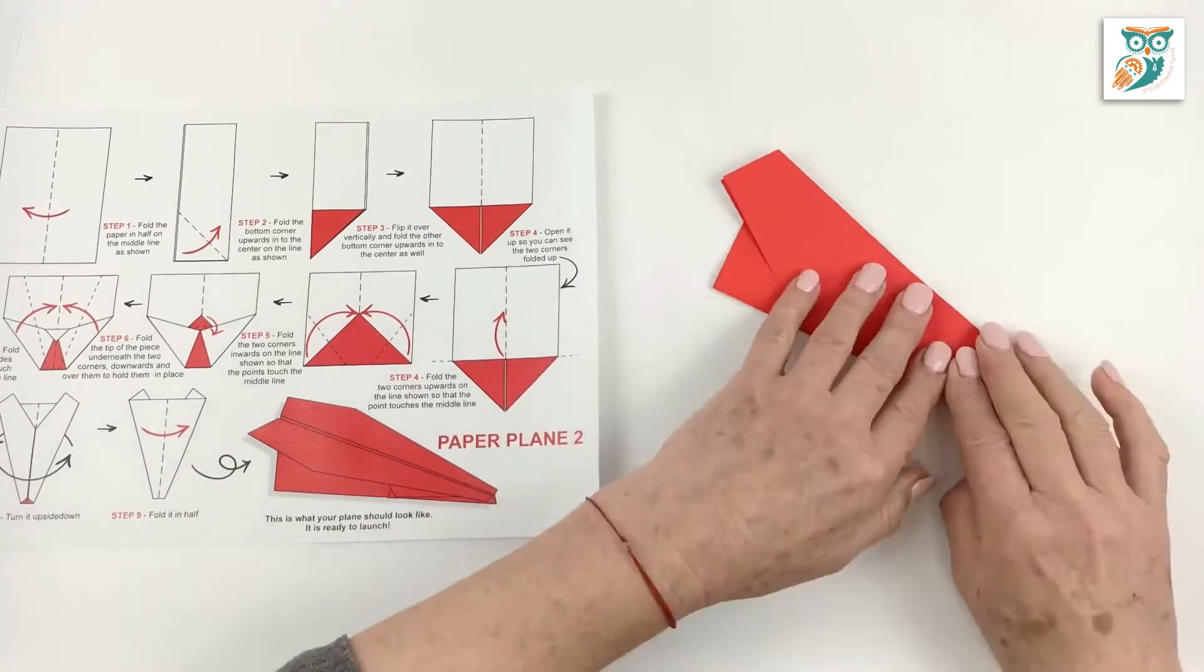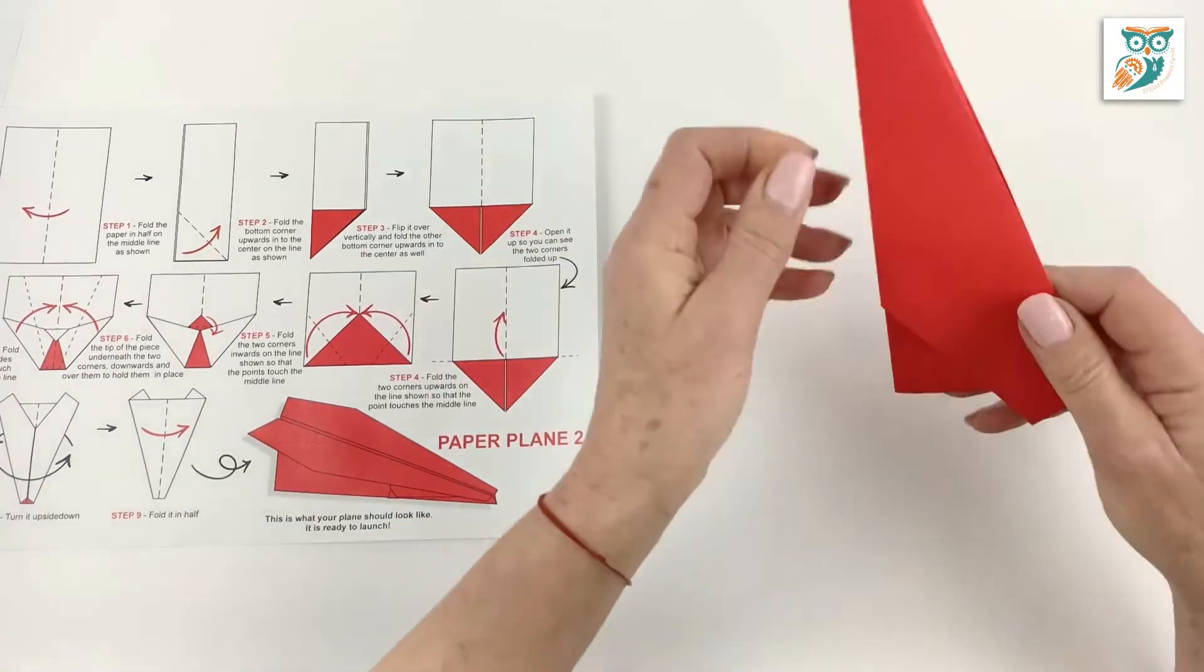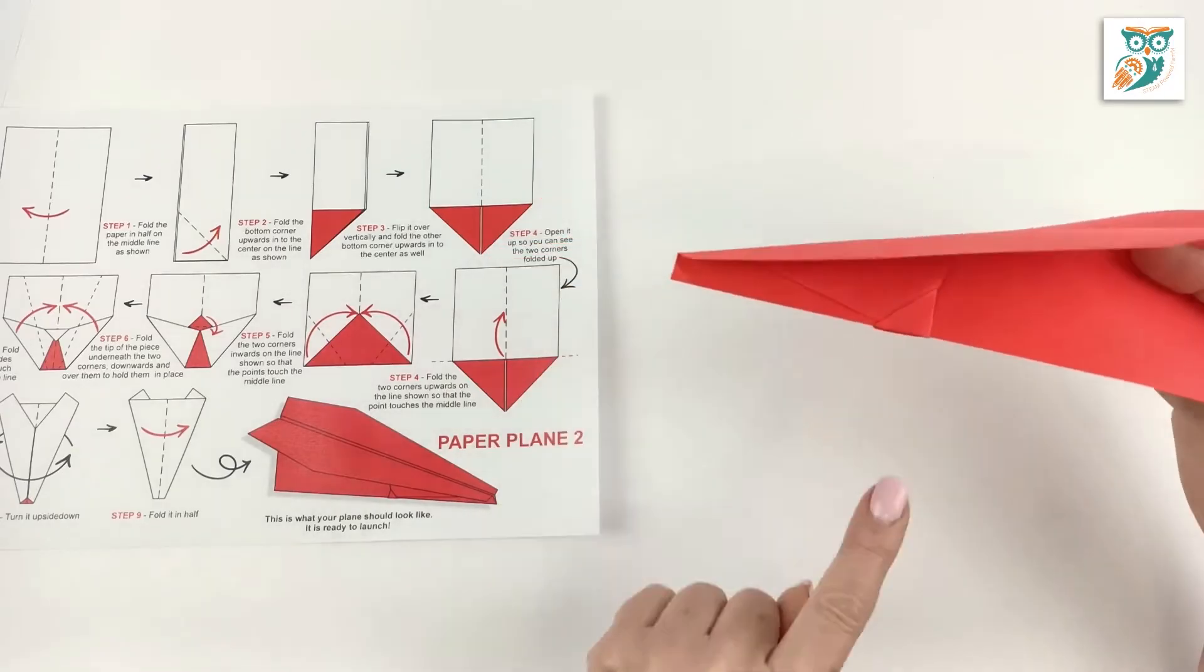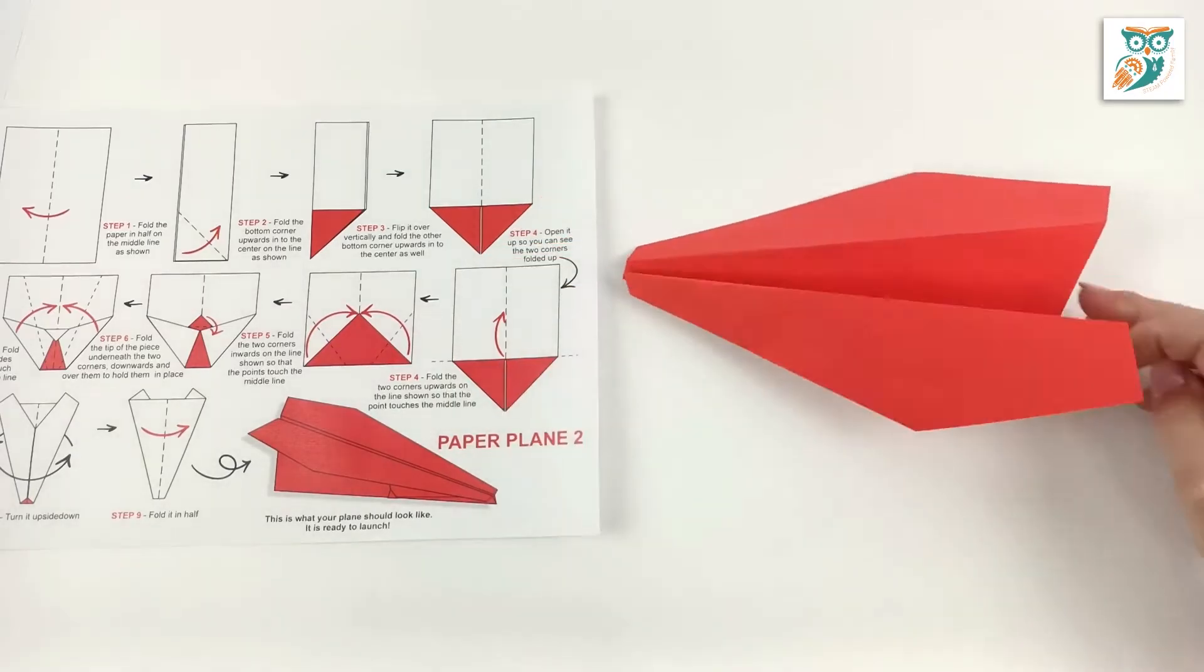Now flip it over and then fold again and then open it up. And again, remember, try and get those wings so that they're up a little bit just to help with your stability.